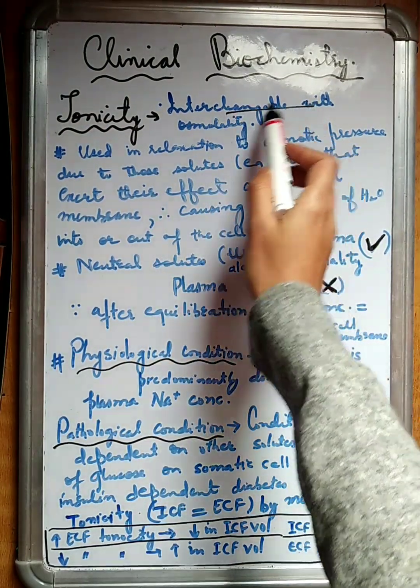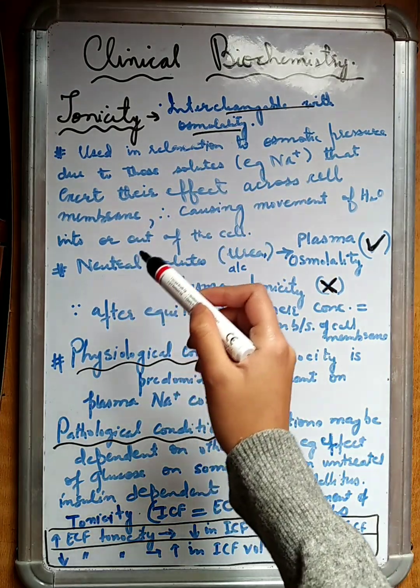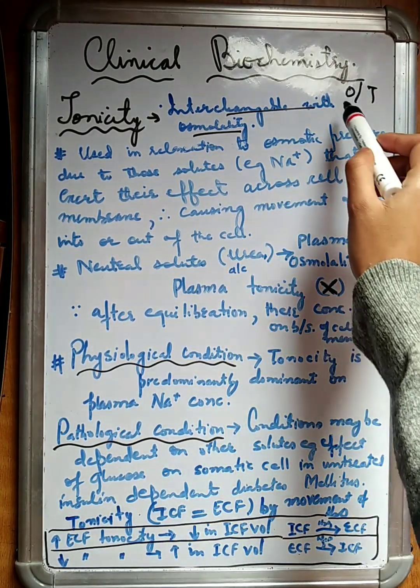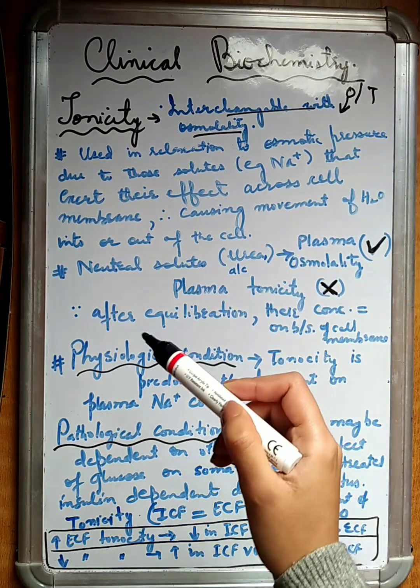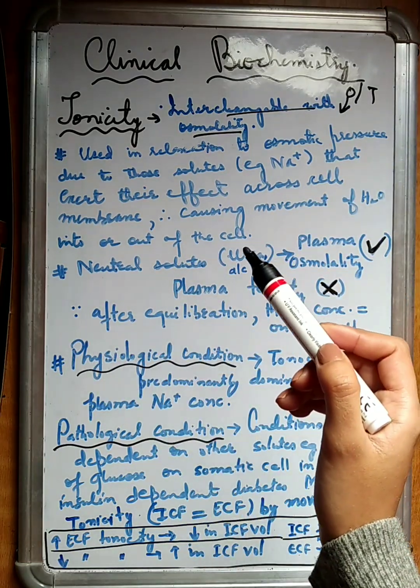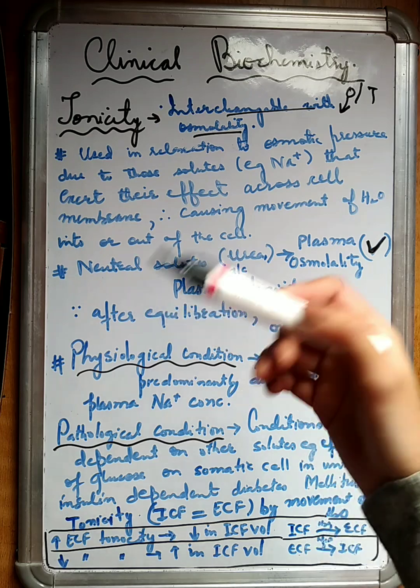It has been interchangeably used with osmolality, but there is a difference between osmolality and tonicity. In osmolality, we actually measure the total number of particles that are present per unit kg.